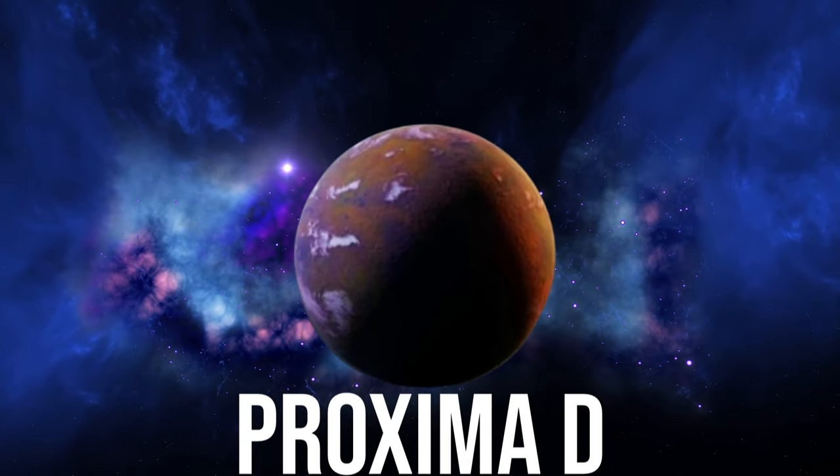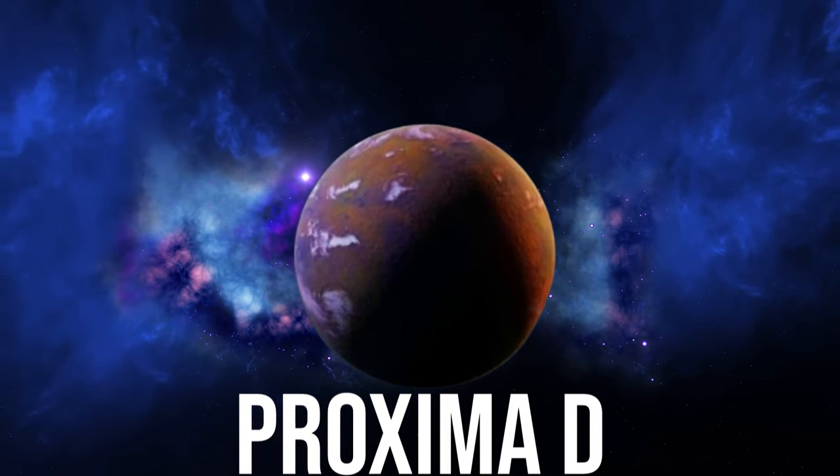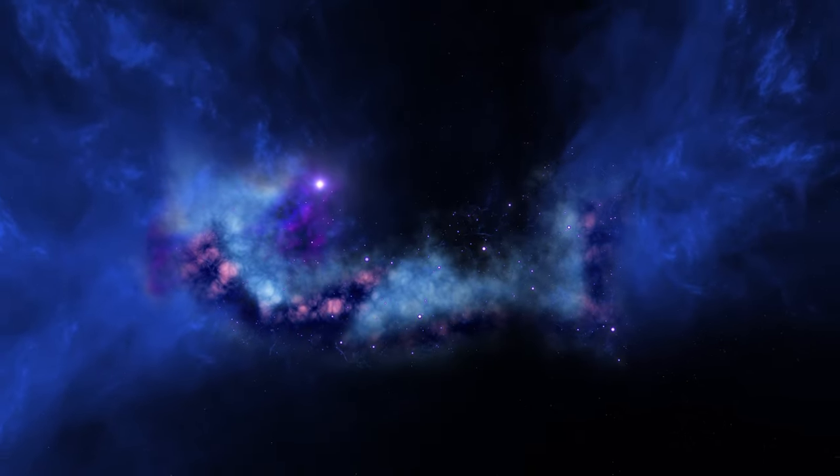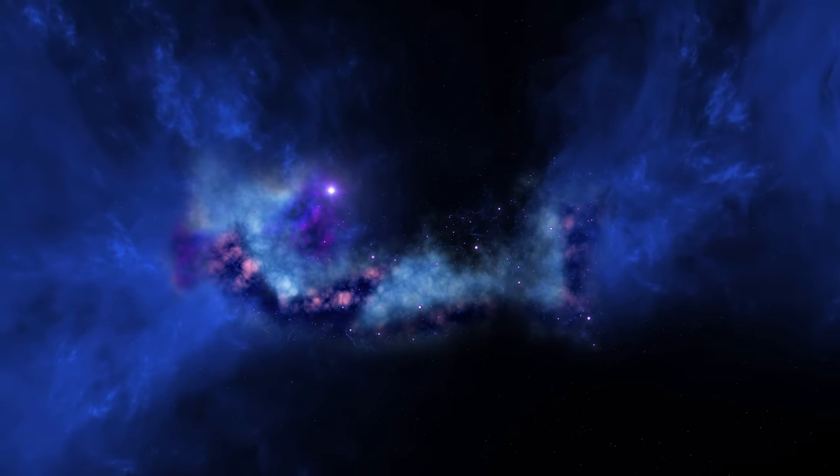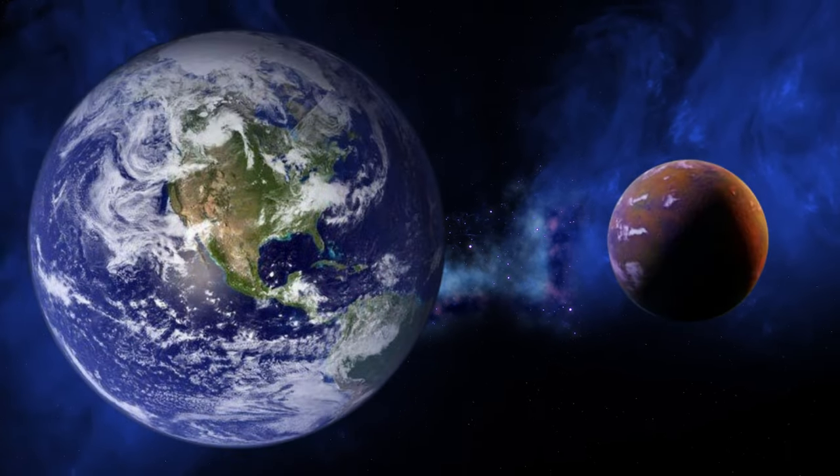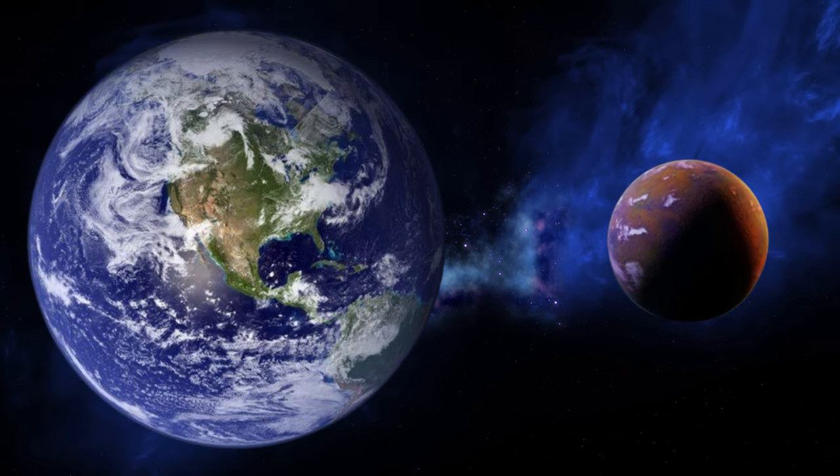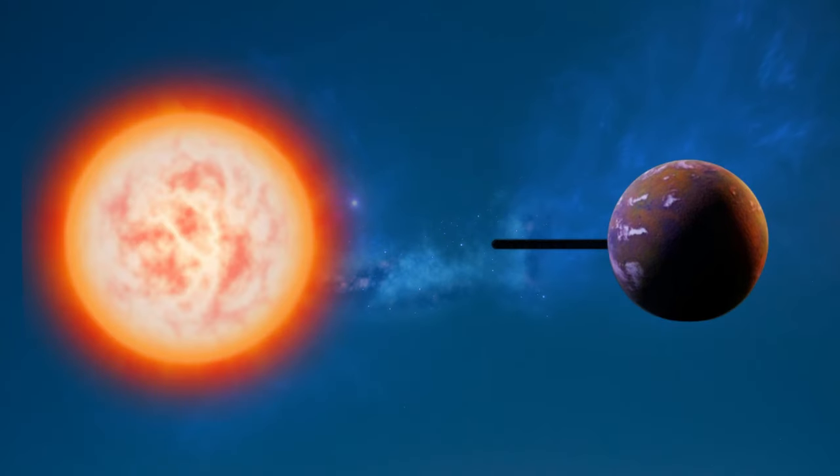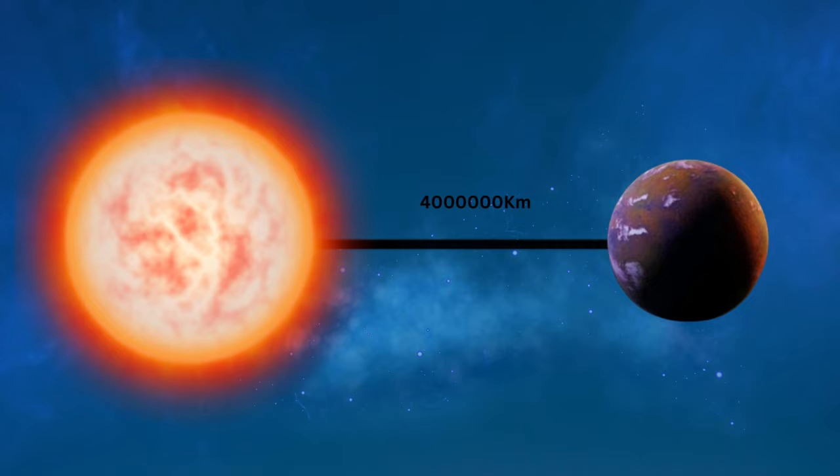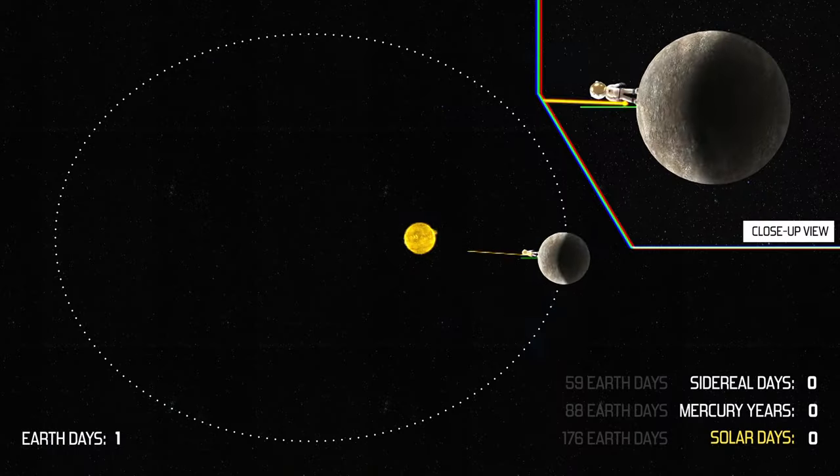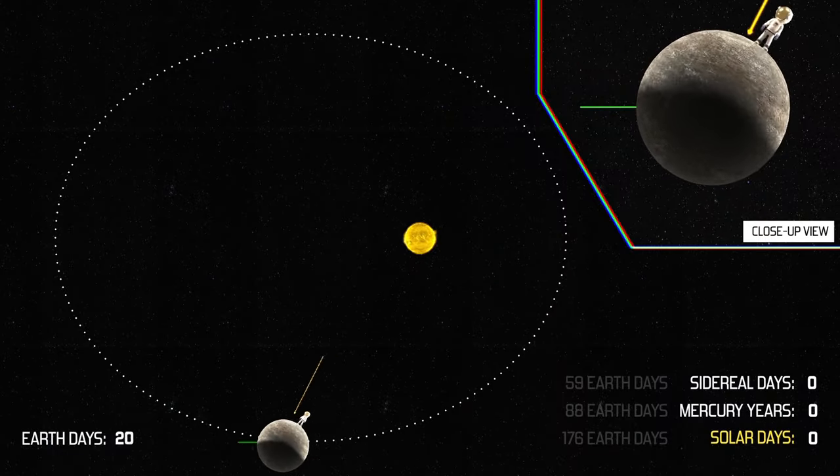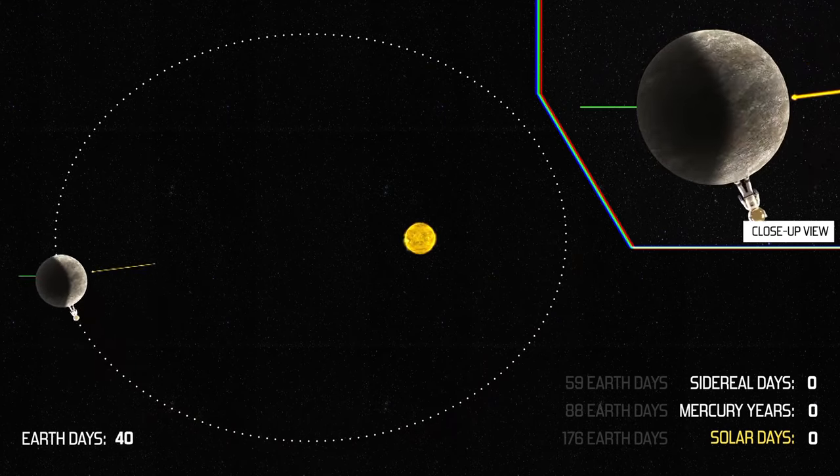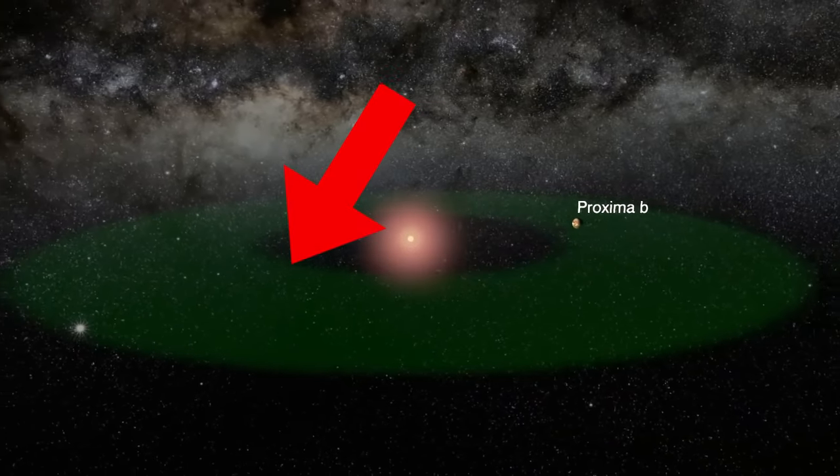Proxima D is the innermost planet of the Proxima Centauri system. It is one of the lightest exoplanets found to date at only about a quarter of Earth's mass. It orbits at an approximate distance of 4 million kilometers, which is more than 10 times closer than Mercury orbits our sun.